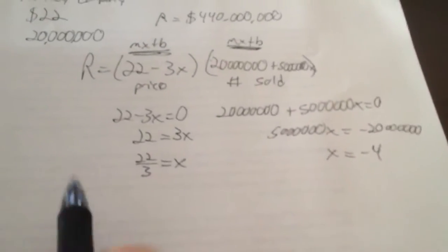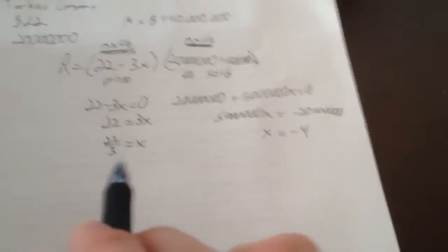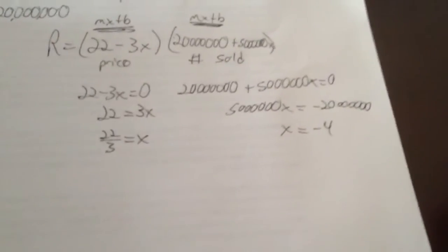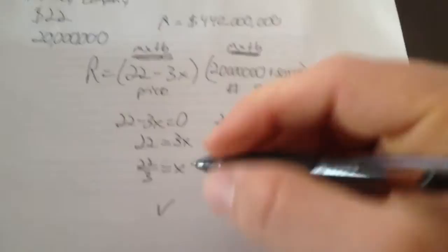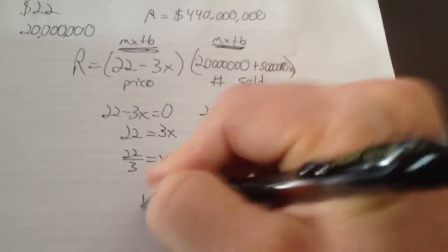So negative 4 is kind of pretty. 22 over 3 is kind of ugly. So that means my vertex is probably not going to be really, really pretty. And sometimes that happens in these. But if you can do this process to find the vertex, you'll be okay.